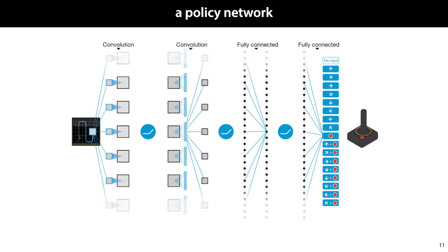Here's what a policy network looks like for the Atari game setting. We take the image consisting of a small grid of pixels, feed it through several convolution layers with ReLU units in between, apply some fully connected layers, and map to an output representing all possible actions — including moving the joystick in eight different directions, pressing the fire button, pressing the fire button and moving the joystick, or doing nothing. Now all we need to do, given a policy network, is figure out how to update its weights while our agent is exploring the world.